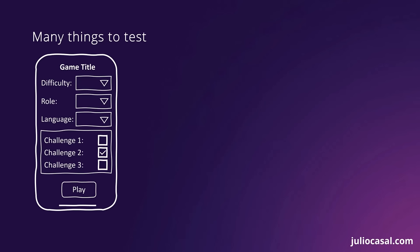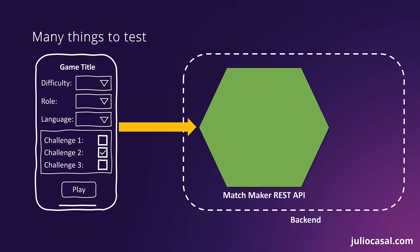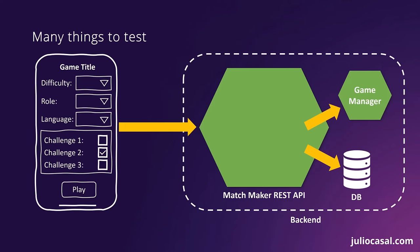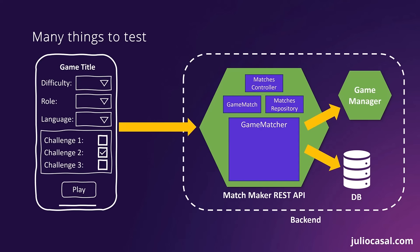Most modern applications involve multiple components that go way beyond the user interface. For instance, this matchmaking gaming application could not provide any of its core functionalities if it was not for its powerful backend. This backend includes the REST API that allows the app to place matchmaking requests and ultimately join players into game matches. This REST API collaborates with other services like the game manager, which is responsible for provisioning the game servers where users will play. The API also relies on a database to safely store all the information related to game matches. Looking deeper into the matchmaker, there are multiple components inside — things like controllers, entities, repositories, and the game matcher, which is the core component responsible for the matchmaking algorithm.